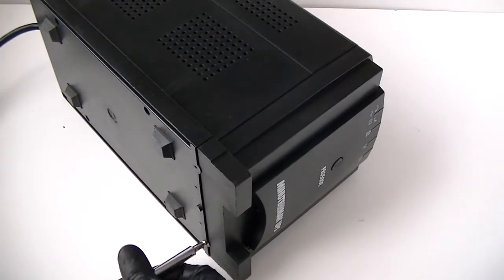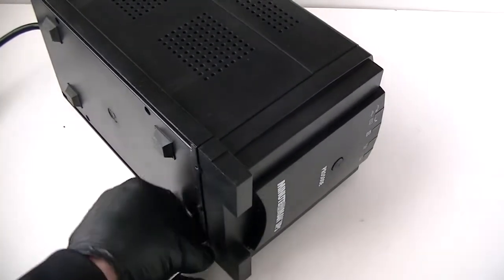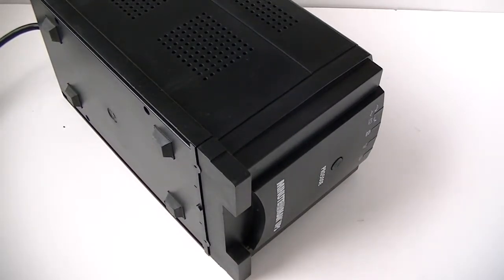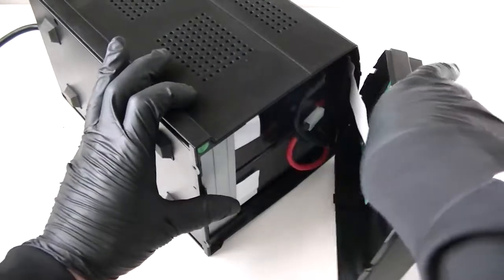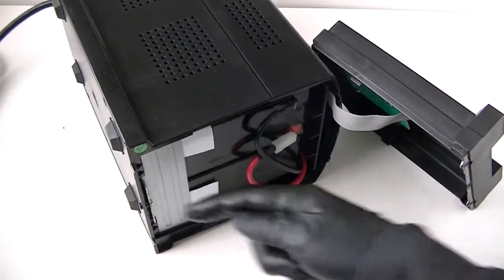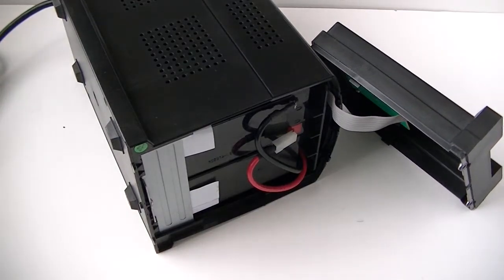I'm going to remove the other one here in the bottom. Get that removed. Now I'm going to remove the front panel. It's plastic. There's going to be another screw right here in the middle. Get that removed.